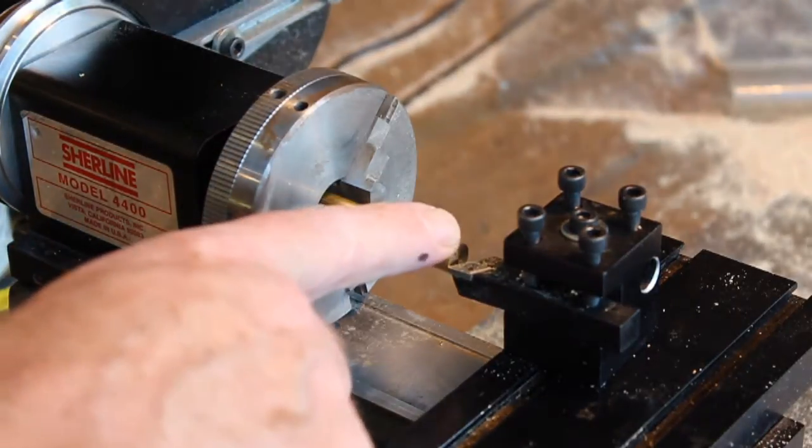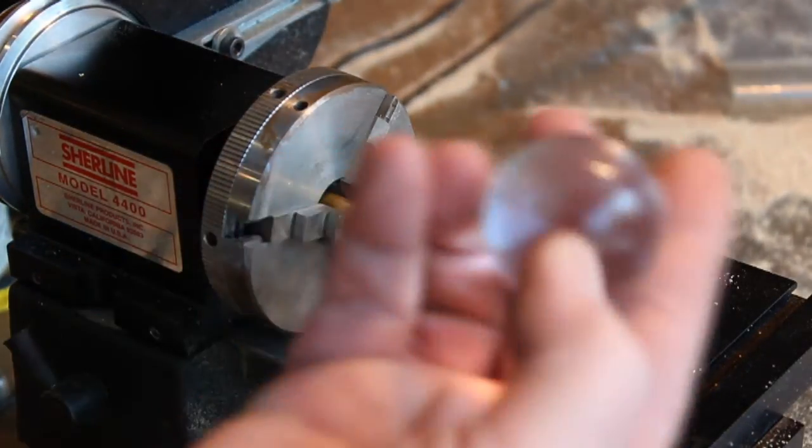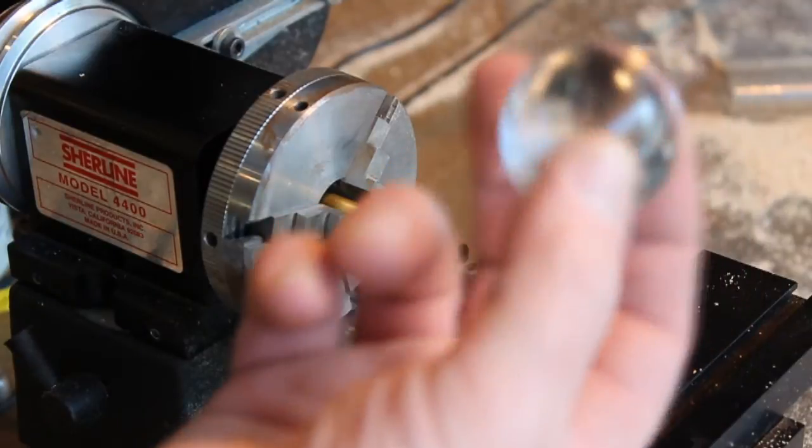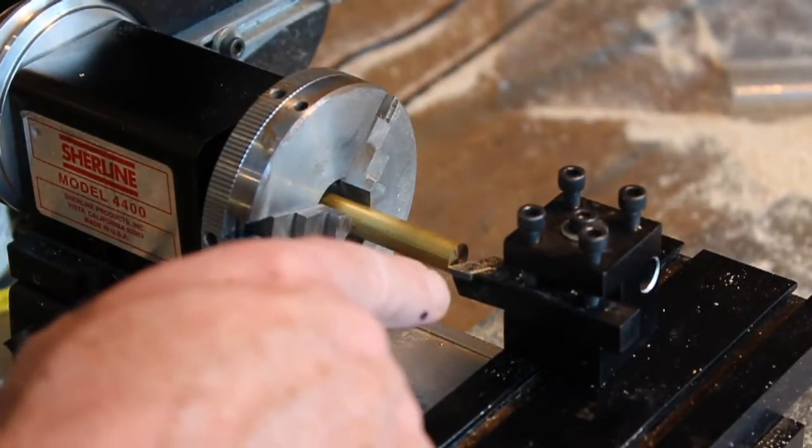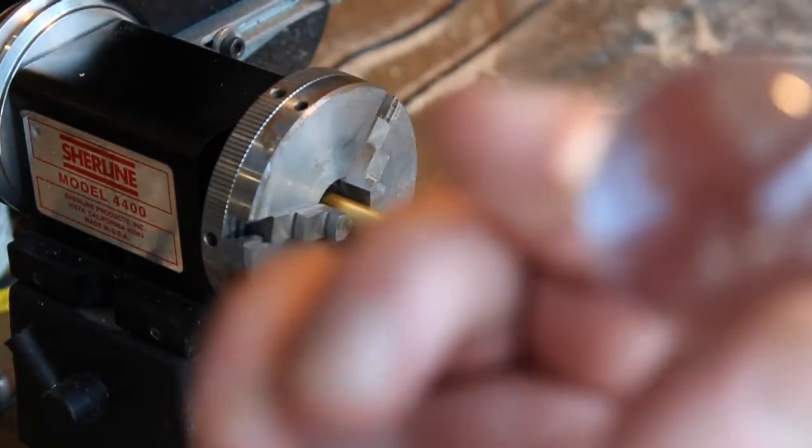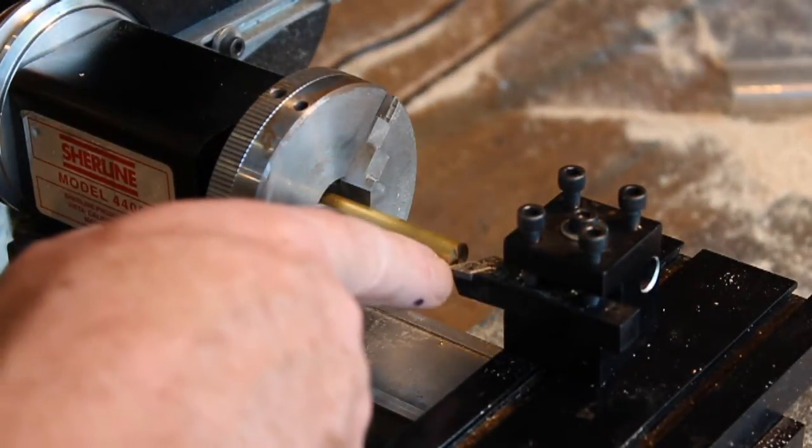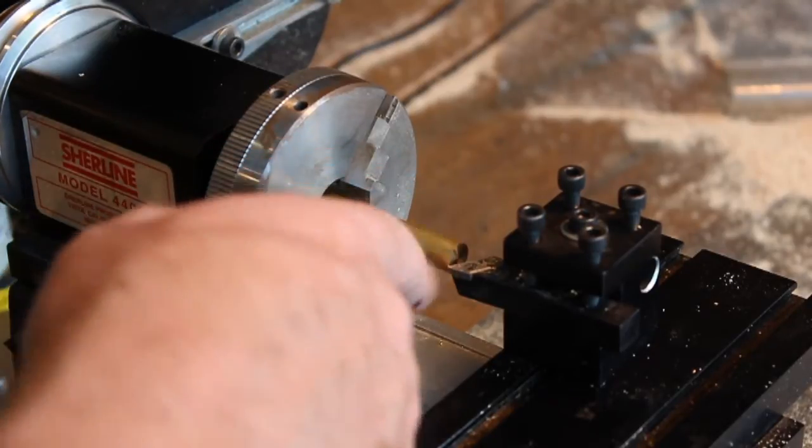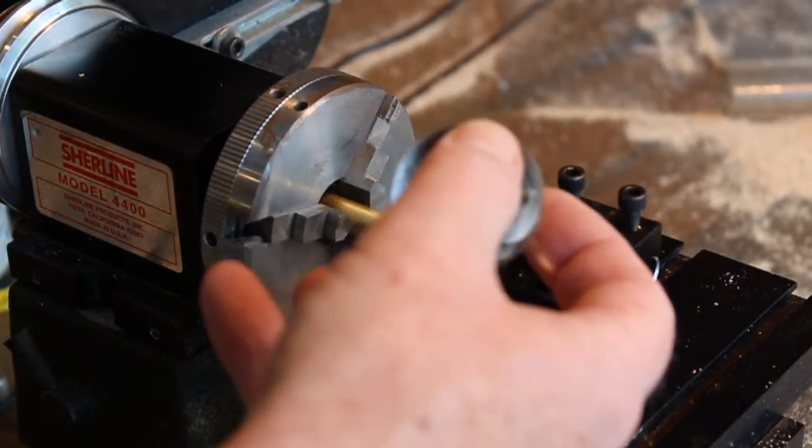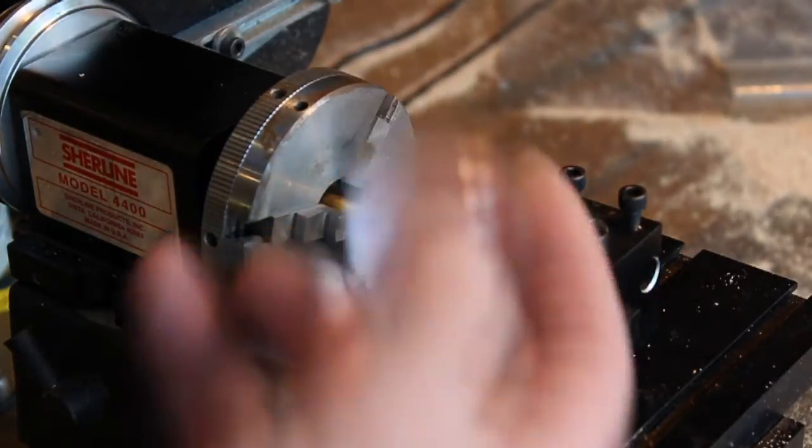I'm about to machine a support bracket to hold the sun in the center of the orrery. What I'm going to do here, this is an inch and a half diameter, so I'm going to machine a radius here so that the sun can sit on that.